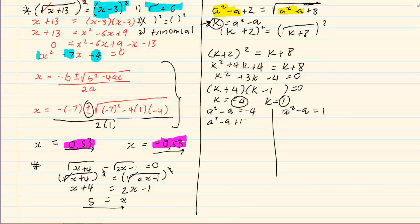a squared minus a plus 4 is equal to 0. And a squared minus a minus 1 is equal to 0. In both cases here, you would have to use the formula.